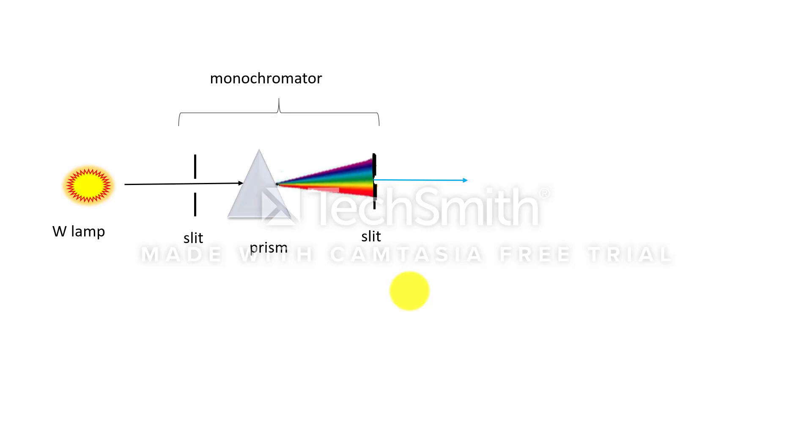The light of single wavelength is allowed to pass through the sample taken in the cuvette and the transmitted light is allowed to fall on the photocell where photoelectricity will be generated and it is allowed to pass through the recorder where it is displayed as absorbance.